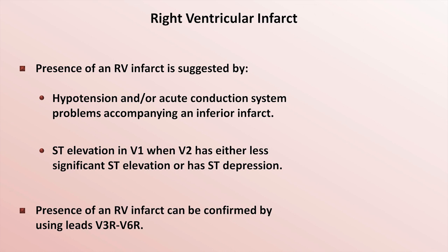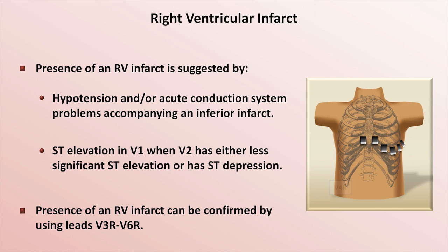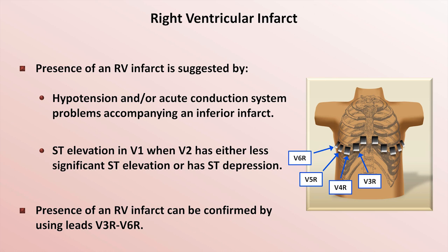The presence of an RV infarct can be confirmed by using some unconventional EKG leads called V3R, V4R, V5R, and V6R — the R standing for right. The location of these right-sided leads is the mirror image of their left-sided counterparts. V4R is in the 5th intercostal space in the right mid-clavicular line, V6R is in the 5th intercostal space in the right mid-axillary line, V3R is halfway between V1 and V4R, and V5R is halfway between V4R and V6R. In practice, most clinicians only bother with V4R, which they create by simply taking the EKG wire normally reserved for V4 and placing it on the V4R electrode.